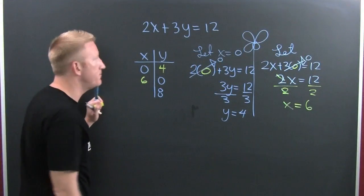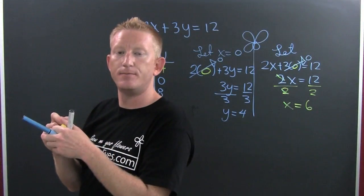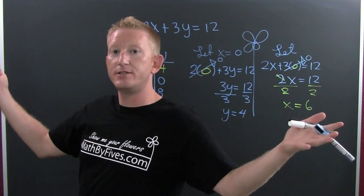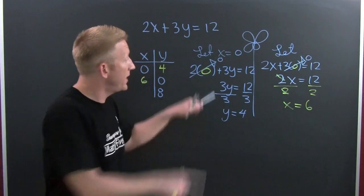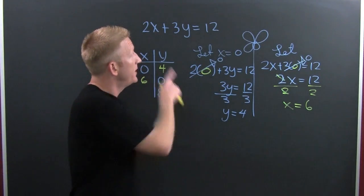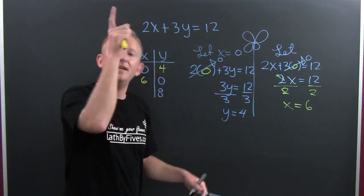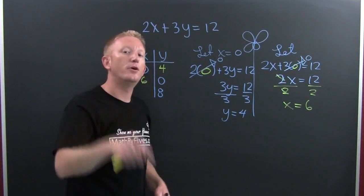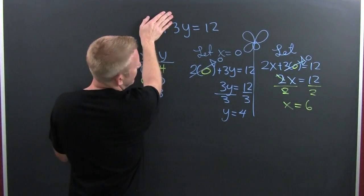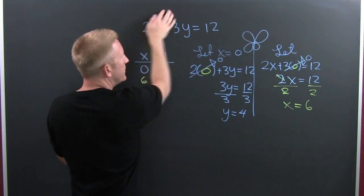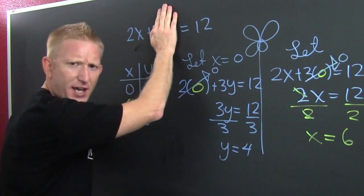Here's the part worth mentioning: when you let x be 0 and solve for y, that's the y-intercept. And when you let y be 0 and solve for x, that's the x-intercept. Those are nice values — divide and you get 4, divide and you get 6.